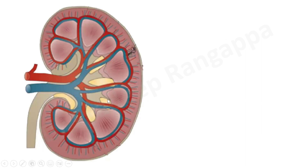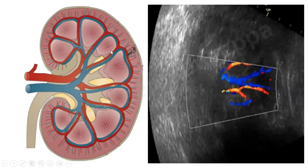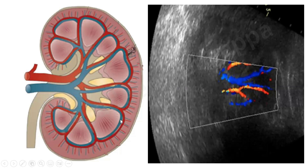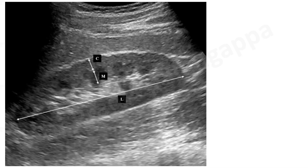If you look at the vascular supply of the kidney, you have the interlobular arteries and the arcuate arteries. To determine the renal resistive index, we need to insoniate either the arcuate arteries or the interlobular arteries. They look something like this — when you put on ultrasound, there is a speckled appearance, and we need to insoniate on these interlobular or arcuate arteries. This is the pictorial representation of how the blood supply of the kidney looks on cross-section.